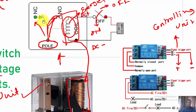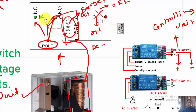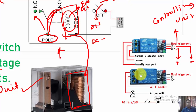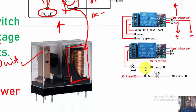Once the coil is energized, the internal pole — which by default is connected to the normally closed position — changes its position and the relay gets activated. Here we have the common terminal, normally open, and normally closed terminals, and we make connections as per the requirement.